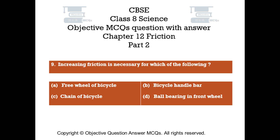Question number 9: Increasing friction is necessary for which of the following? Option A: Free wheel of bicycle. Option B: Bicycle handlebar. Option C: Chain of bicycle. Option D: Ball bearing in front wheel.